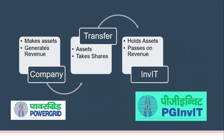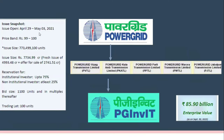The Power Grid InvIT would take completed, operational assets that are generating revenues and transfer them onto an InvIT. In lieu of this transfer, Power Grid would take certain shares in the company. Then through an IPO — involving a fresh issue as well as an offer for sale — they offloaded some of their stake. The IPO happened in 2021, and Power Grid transferred five assets to PG InvIT.